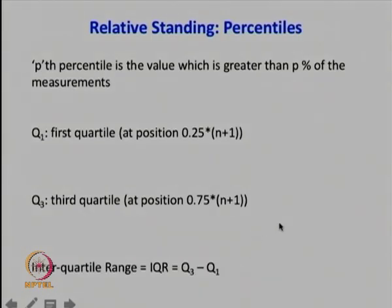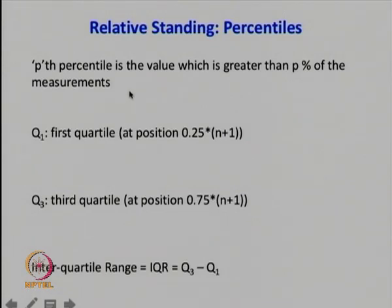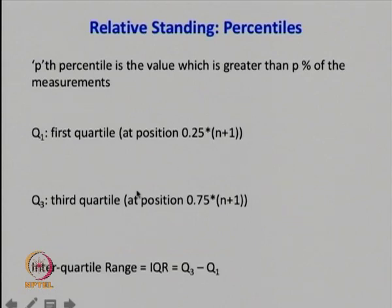Another way of characterizing relative standing is using the concept of percentile. The pth percentile is the value greater than p percent of the measurements. For example, someone in the 99th percentile has performed better than 99 percent of the population. You can use these positions to calculate the first quartile, second quartile (the median, at position 0.5 times n+1), and third quartile.